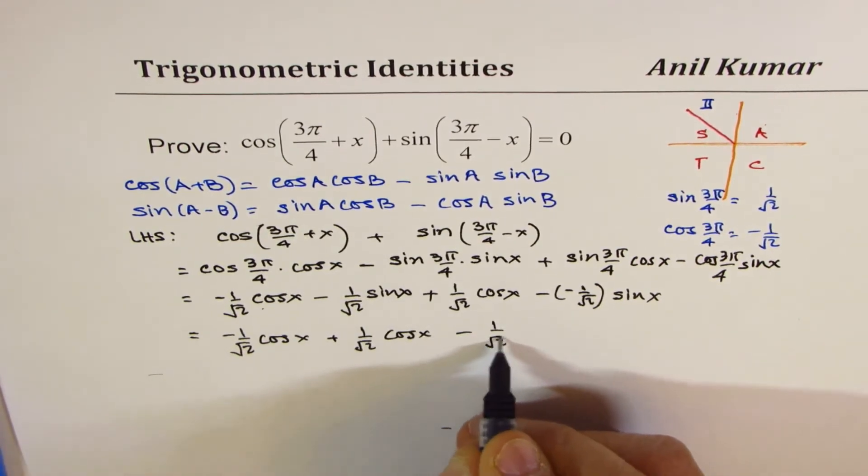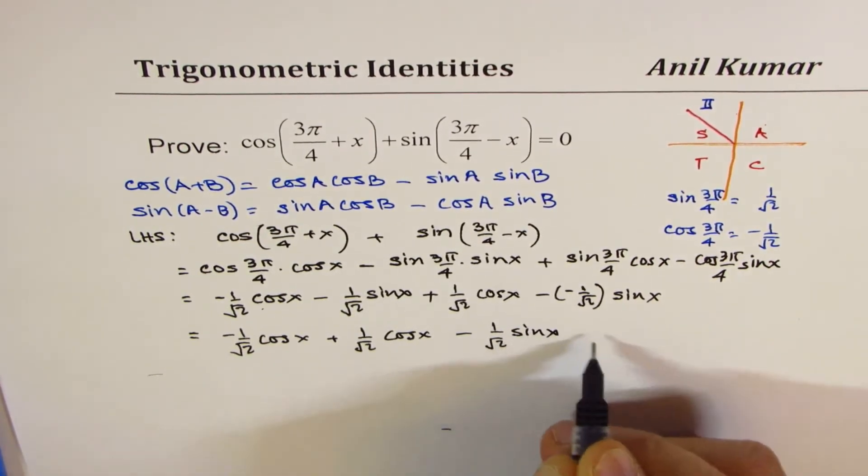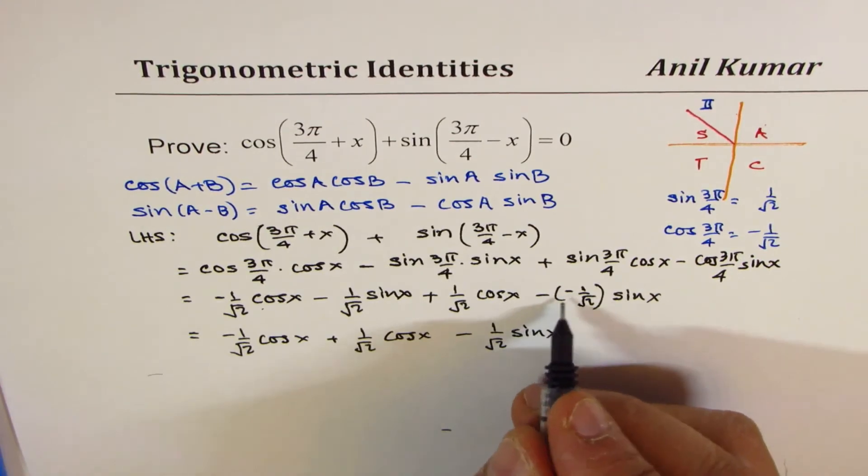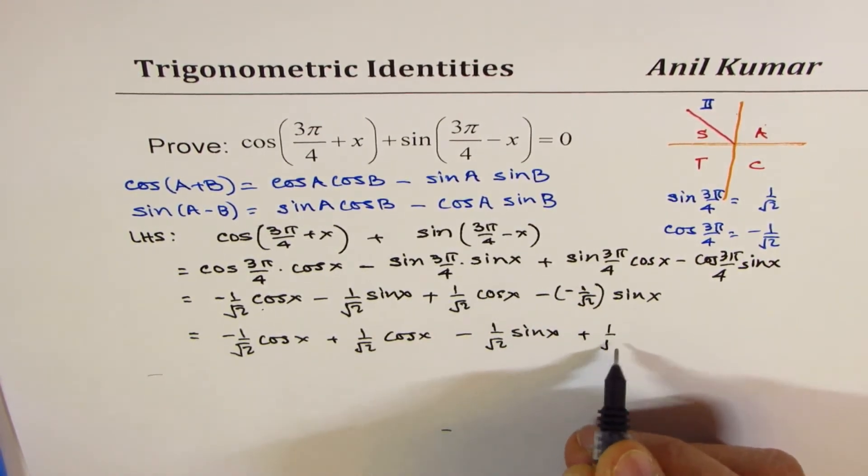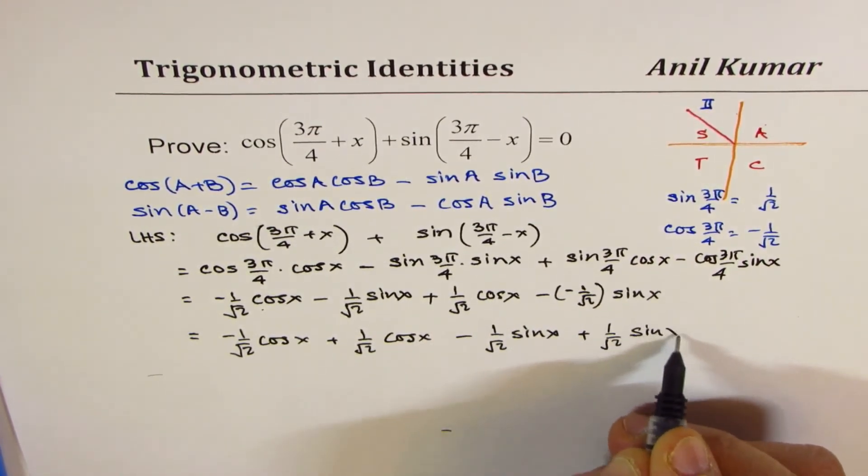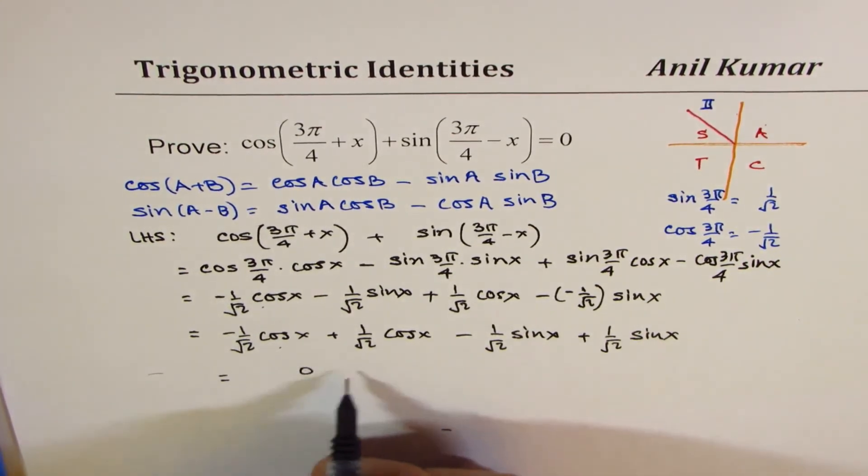And here we have 1/√2 sin(x) with a minus sign, and this becomes + 1/√2 sin(x).